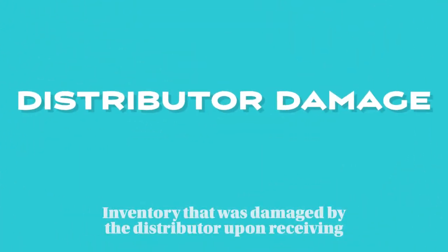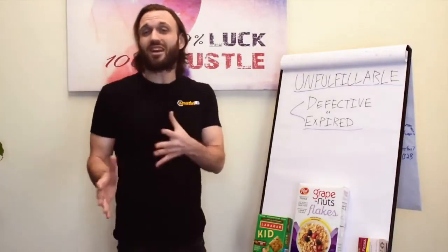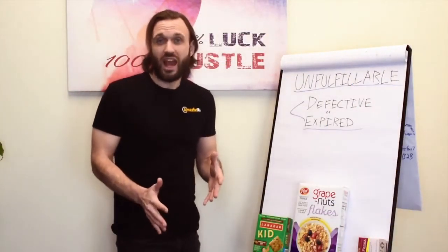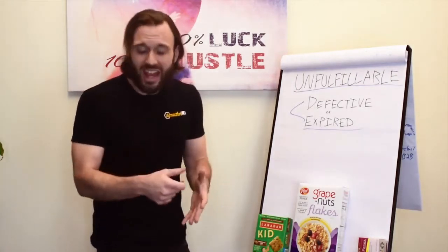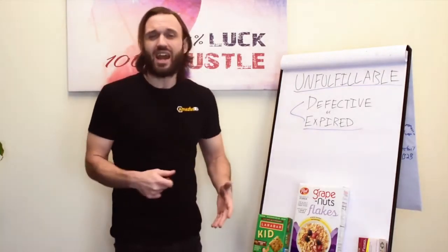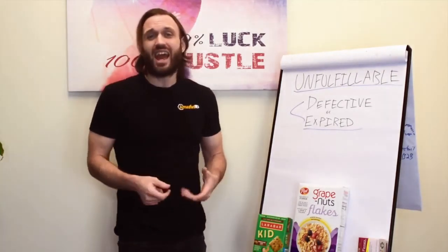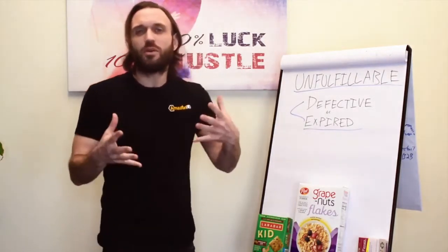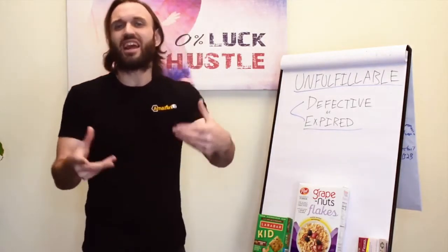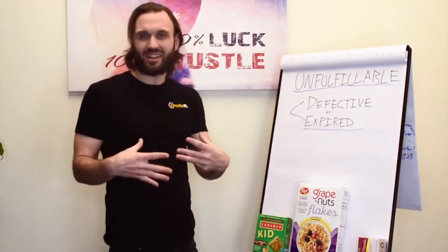Then we have distributor damage, which is when it was damaged by the seller, the vendor, or the distributor upon receiving. So when Amazon is processing your inventory at their fulfillment centers — scanning it off the pallets or out of UPS boxes — they'll flag it as distributor damage because they received it that way.